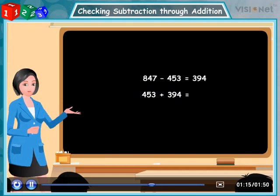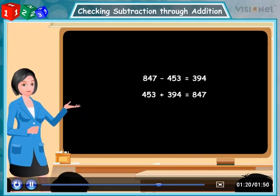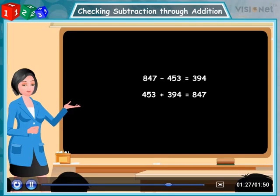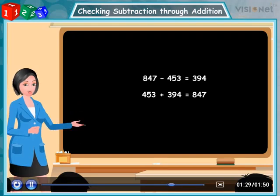The sum obtained is 847. Now look at the sum. It is same as the bigger of the two numbers we have given. Therefore, the result of the subtraction is correct.